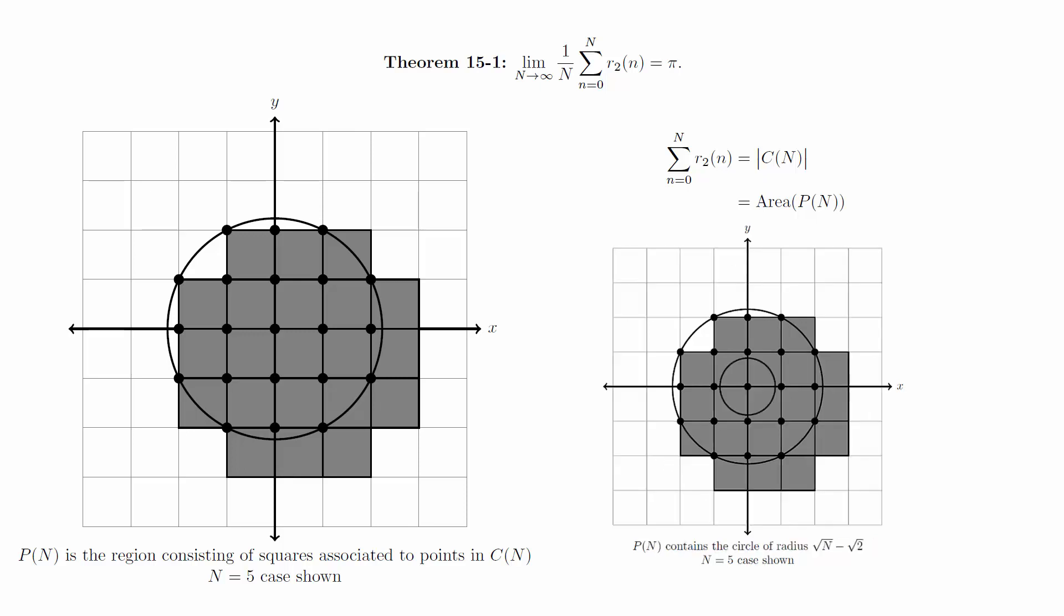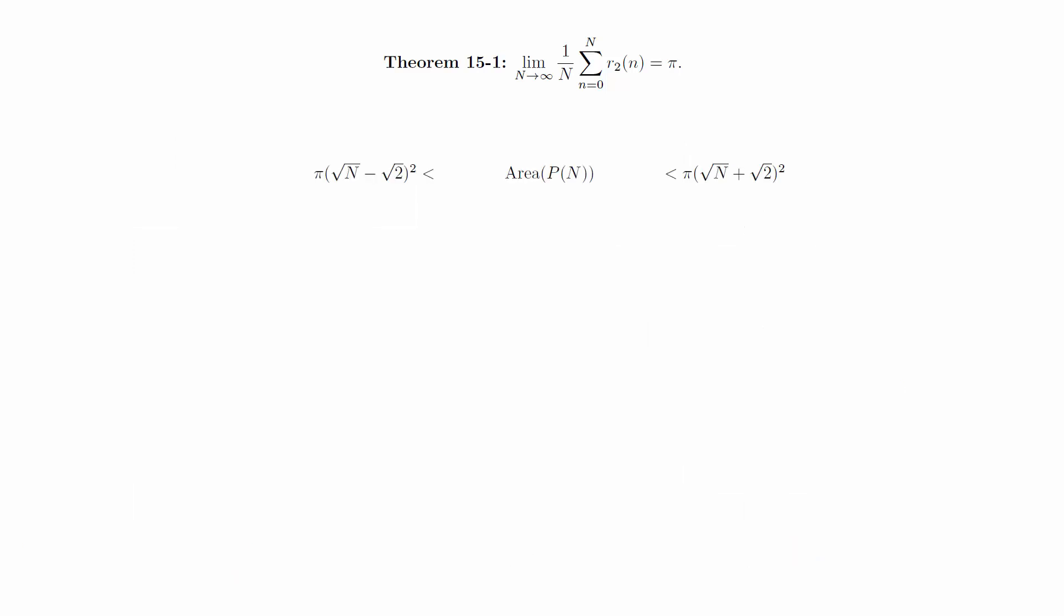Similarly, we can see that the region p(n) must contain a circle centered at the origin of radius square root of n minus square root of 2. This gives us an upper bound and a lower bound for the area of p(n), and from here it's just some substitutions in algebra.